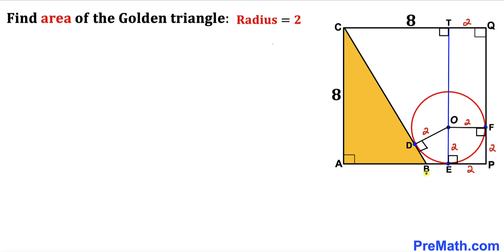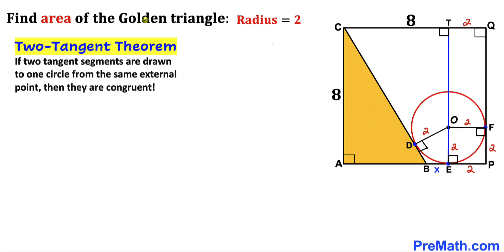Let's assume that segment BE is X. Recalling the two-tangent theorem: if two tangent segments are drawn to one circle from the same external point, then they are congruent. In this diagram, BE and DB are tangents from the same external point B. Therefore BE equals DB. If BE is X, then DB is X as well.